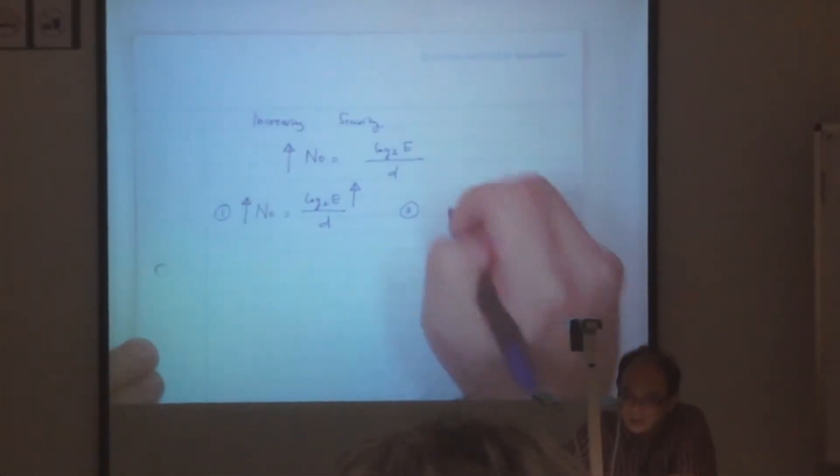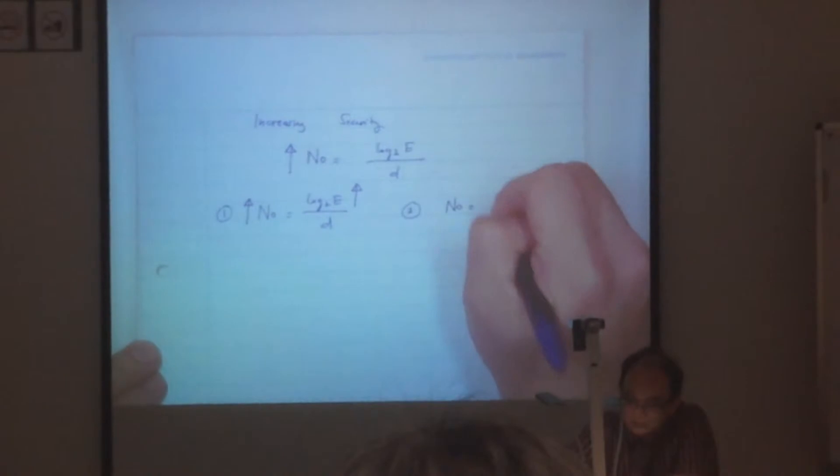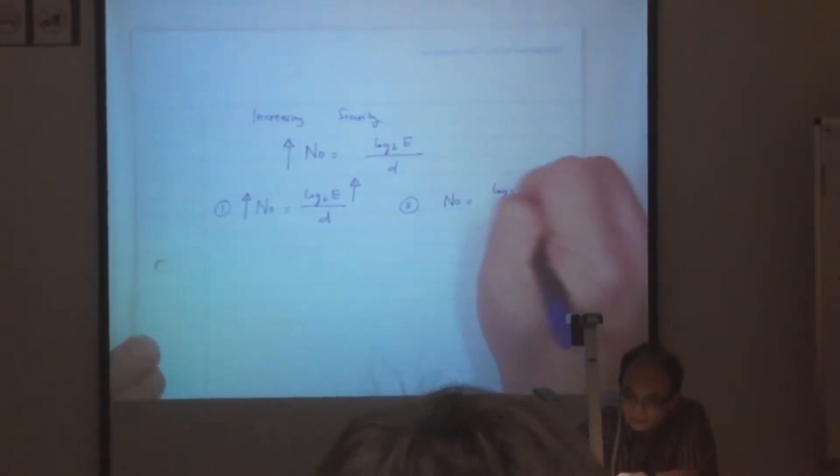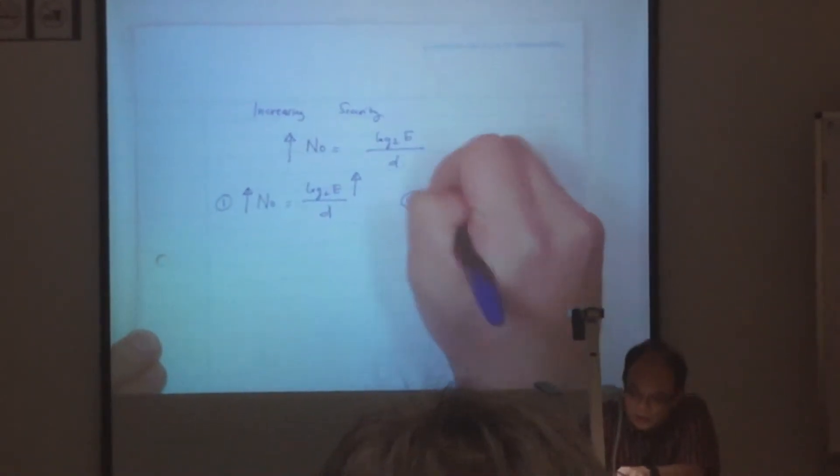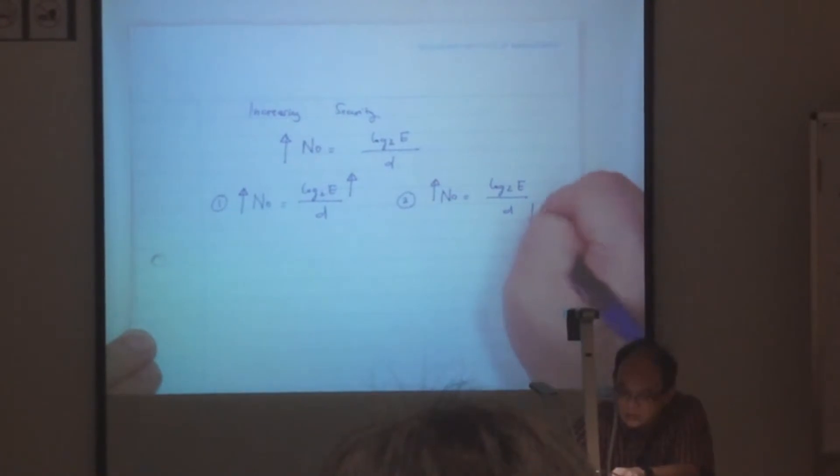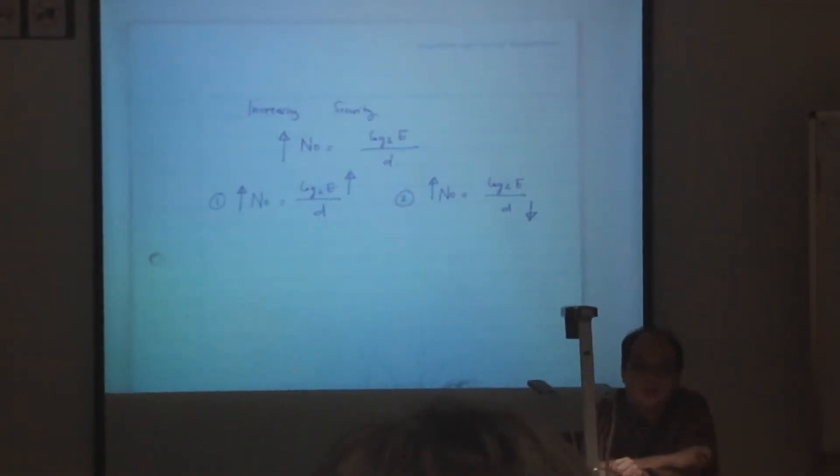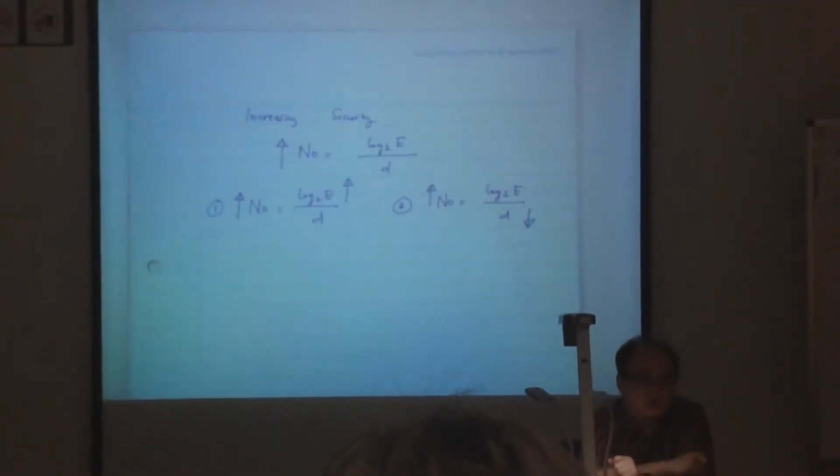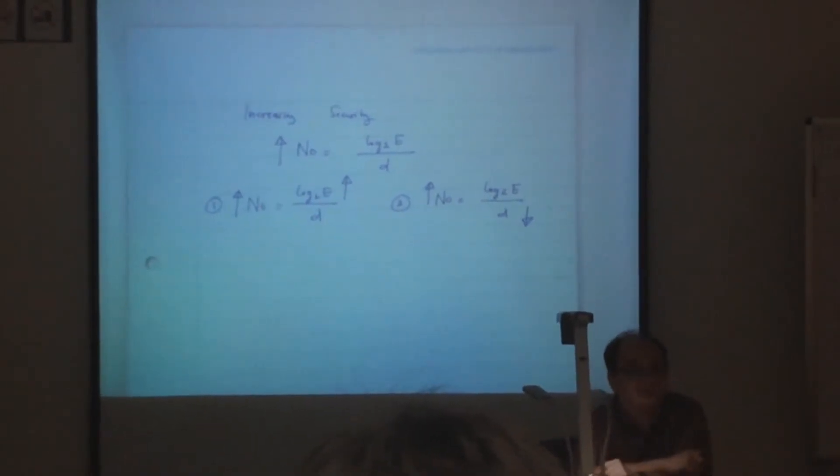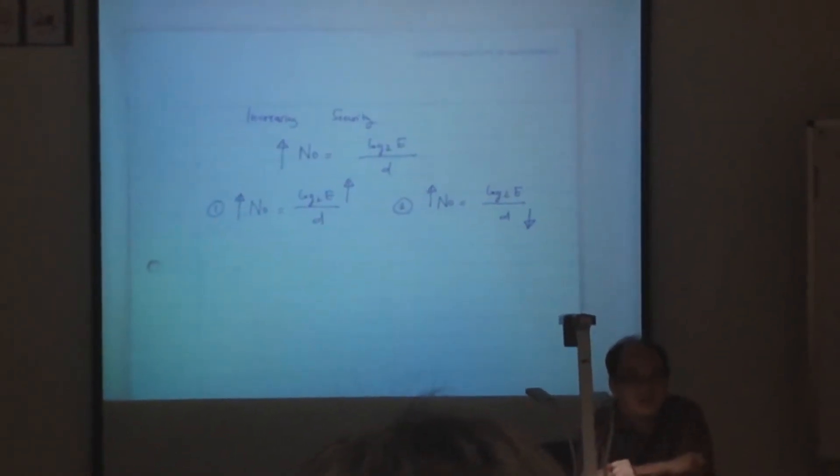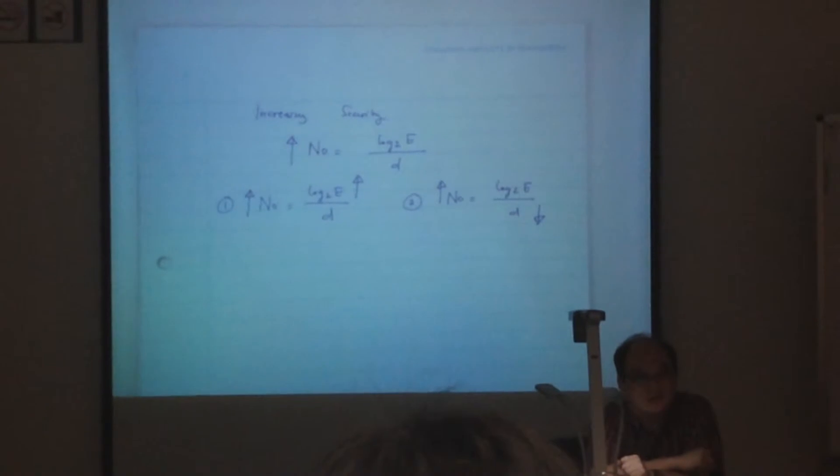So the second one is we want to increase N0. The other option is you decrease D. But we have studied before that D actually is a constant. It's a constant. So how can we decrease D?